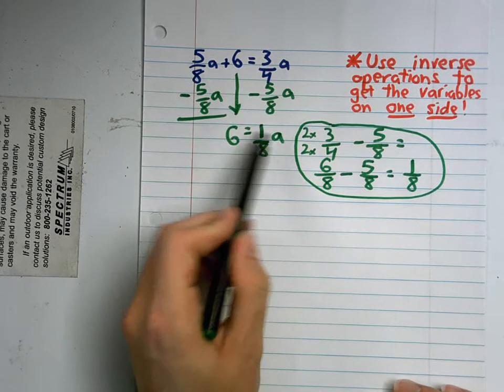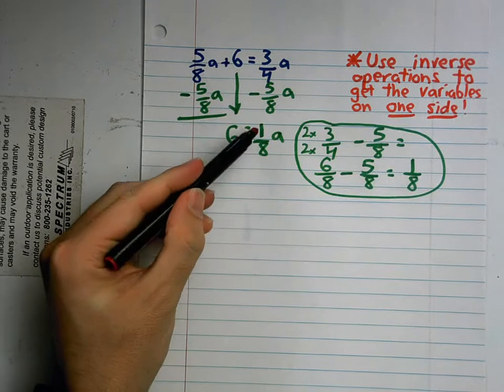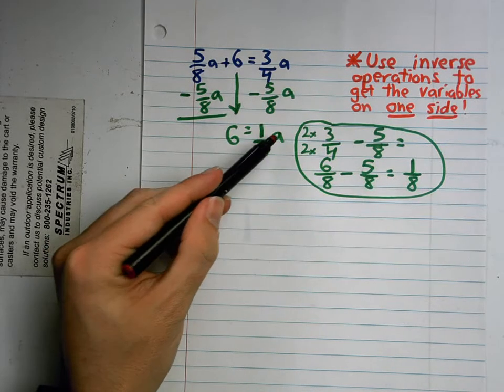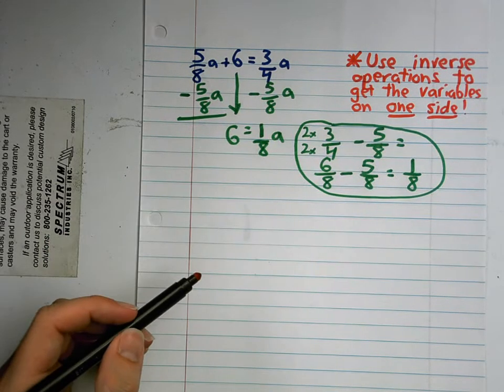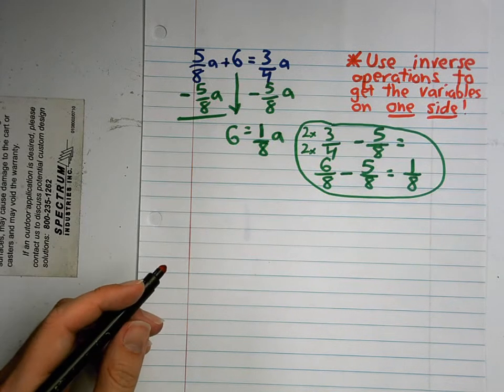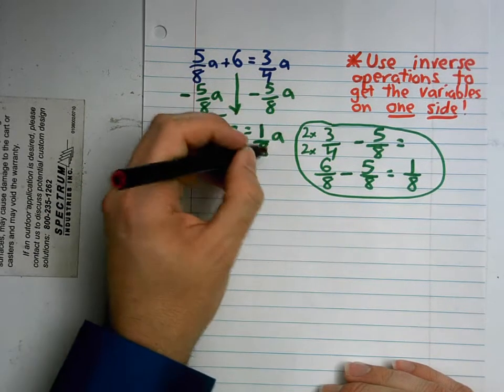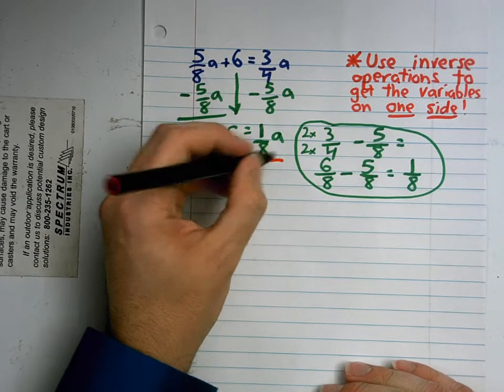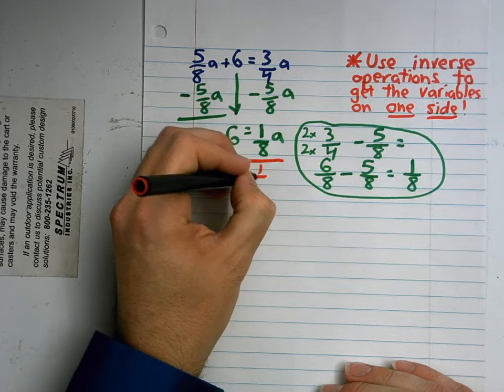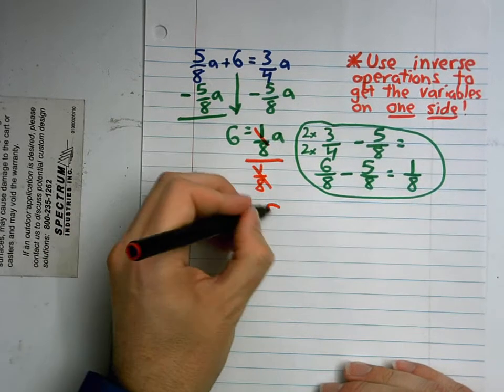Now we're working on this right here. Now, 1/8th times a. What's my inverse operation here? If I'm going 1/8th times a, it's going to be division. Good news is, we know how to divide by fractions. So I'm going to divide this one by 1/8th. And I know they're going to cross each other out and I have a down here.